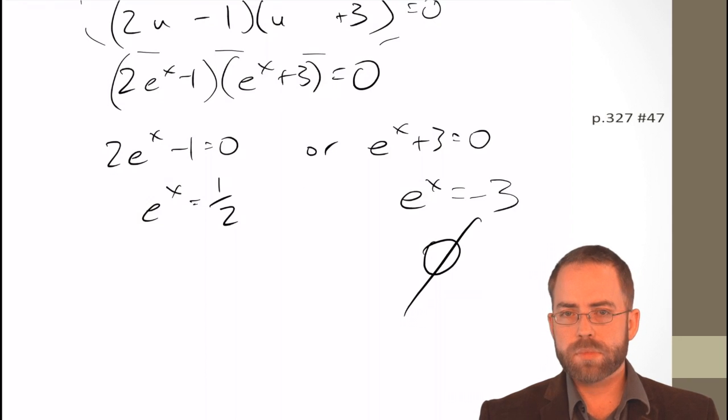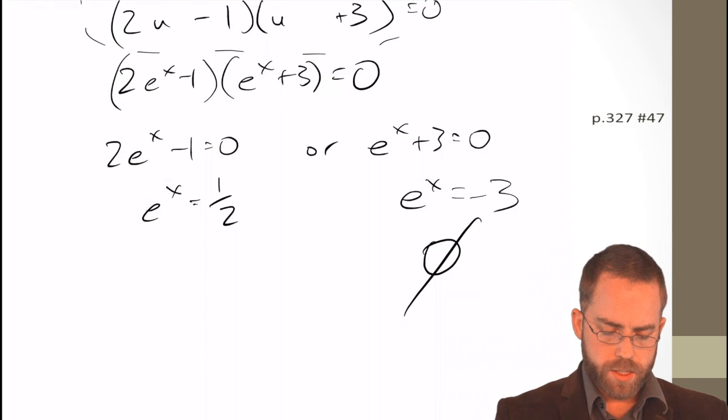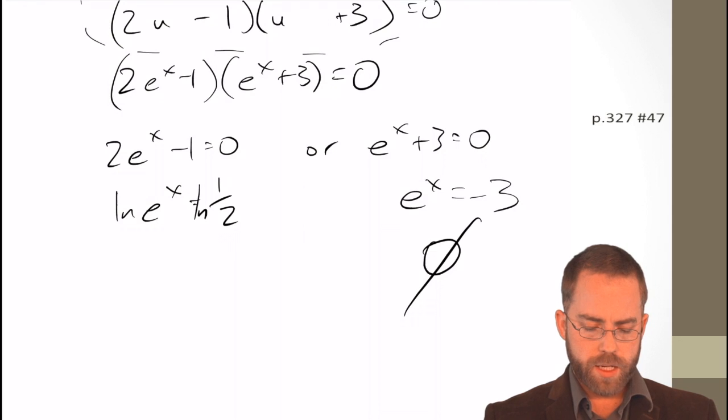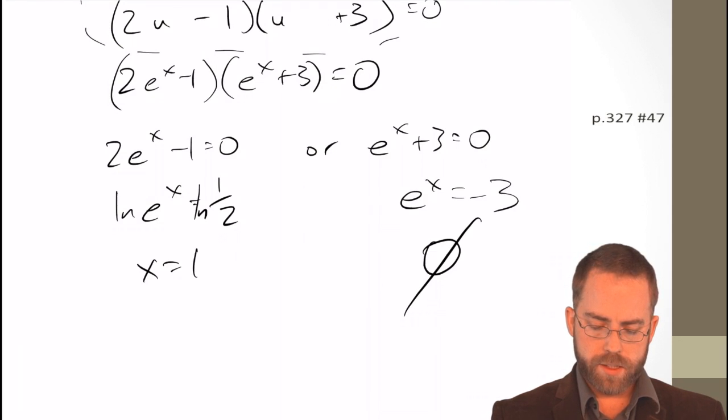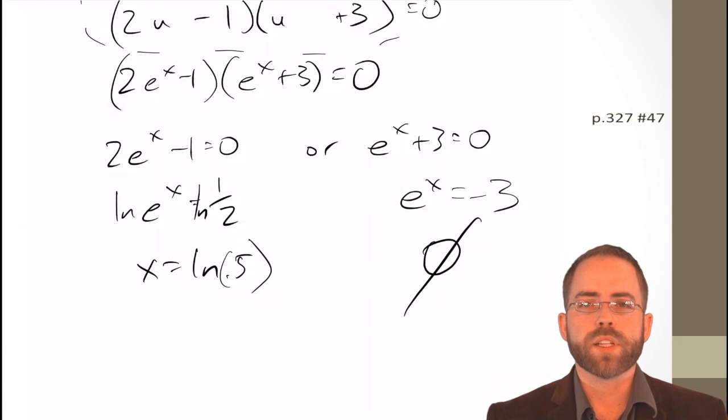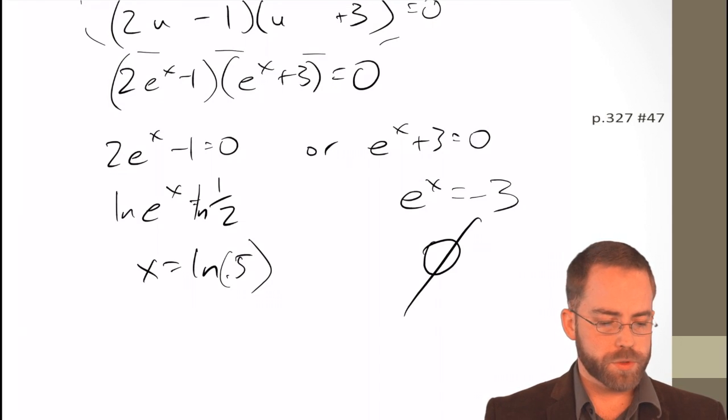But here, e to the x equals half. That's something that we can solve. But, again, not exactly sure what it is. Going to have to take the ln of both sides. So, that gets me that it is ln of 0.5, which is a decimal that we're not super interested in.